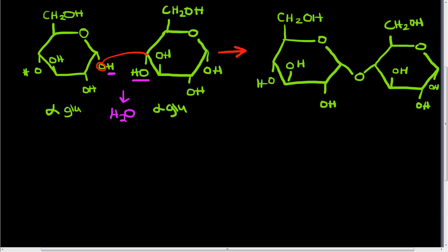So what makes this a 1,4 linkage? It's because it's a linkage between carbons one and four. So let's number those carbons. Here we have our carbon one, two, three, four, five, and carbon six hanging off the end. So there's our carbon one. And here we have our carbon one — one, two, three, four, five, and six. You can see this glycosidic linkage is between carbons one and four, so we call it a 1,4 glycosidic linkage.